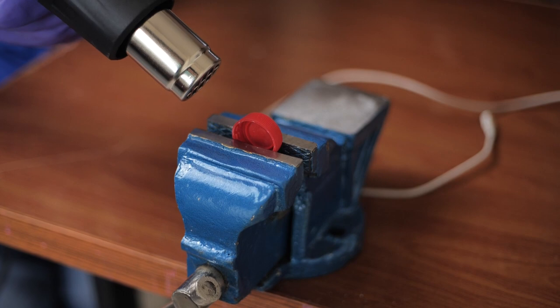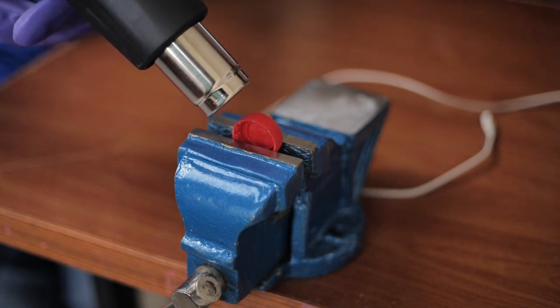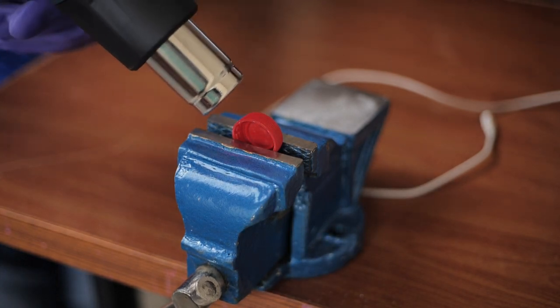Then, use the heat gun on the bottle cap to melt it a little bit. Keep using the gun on the cap until you notice that it is starting to melt.